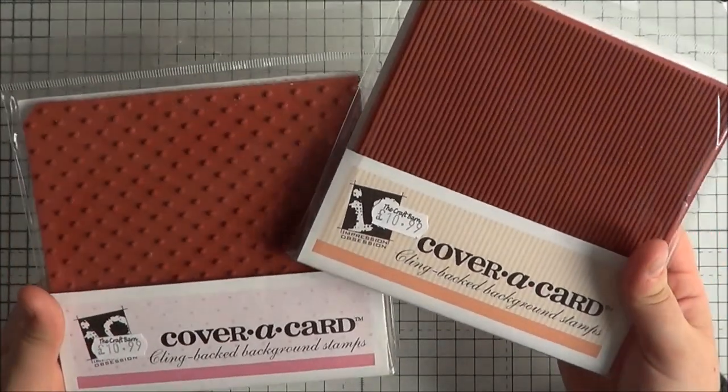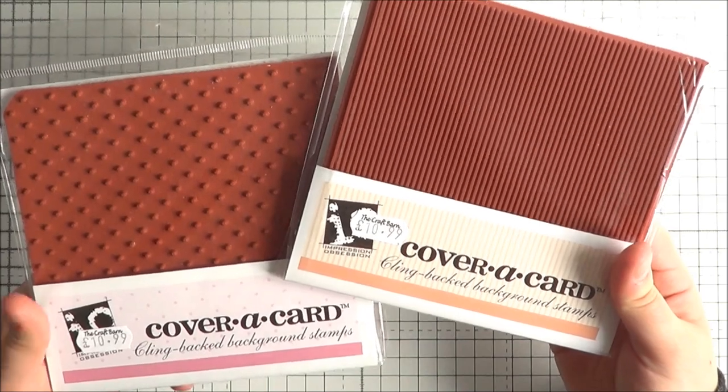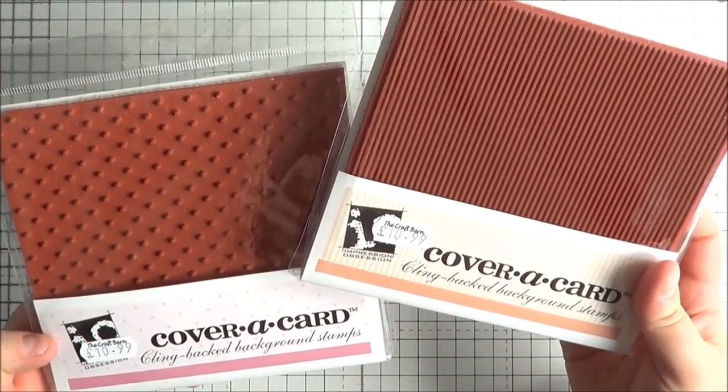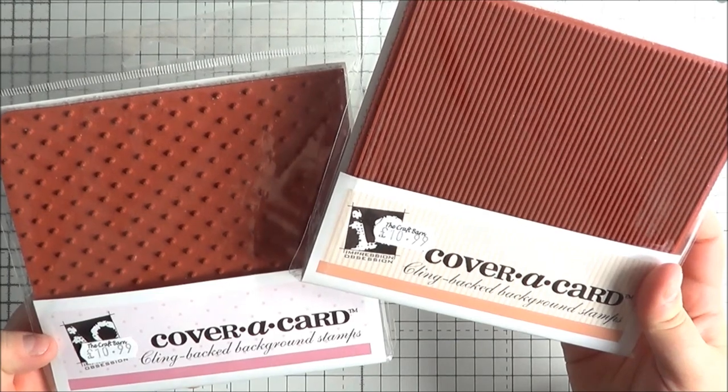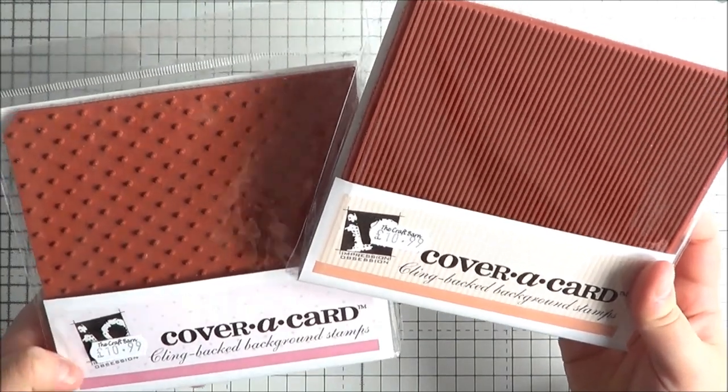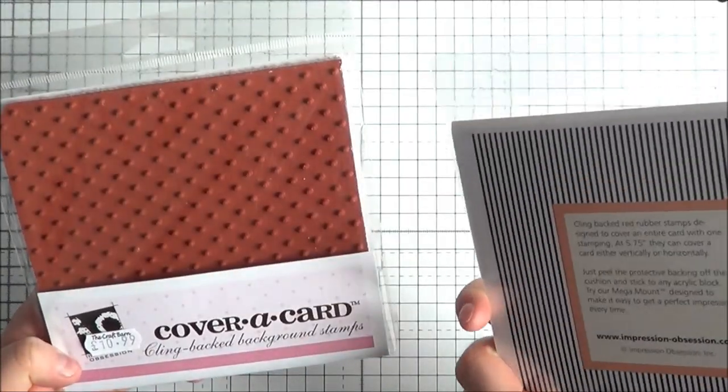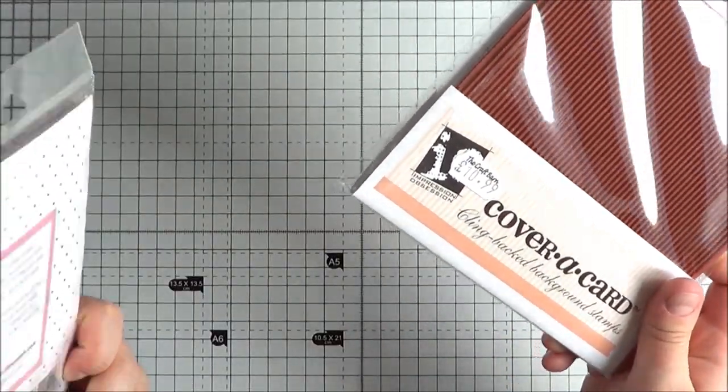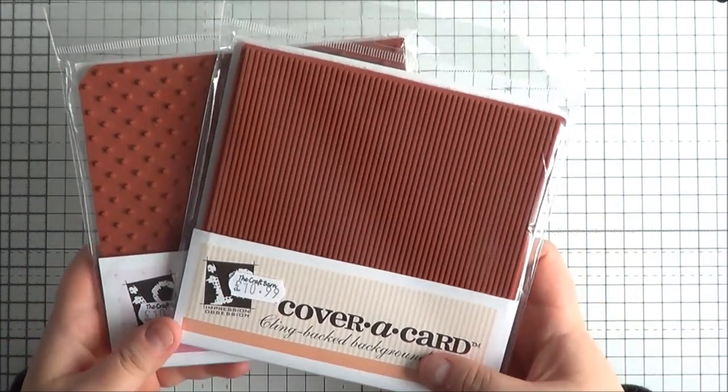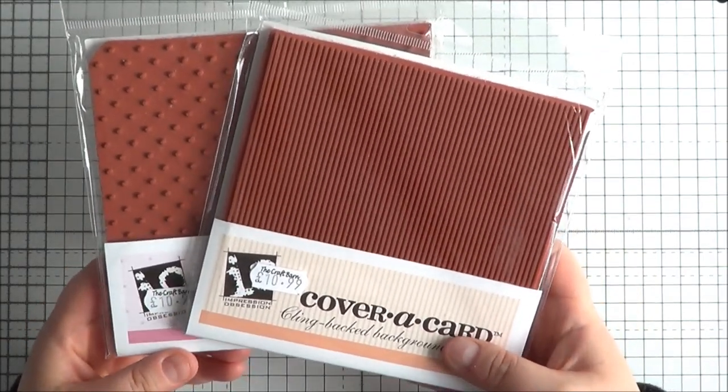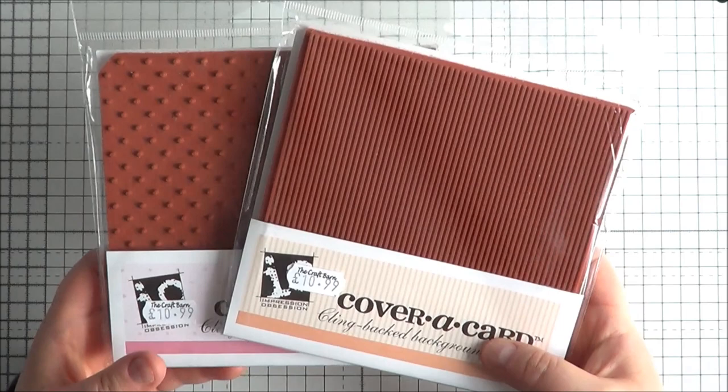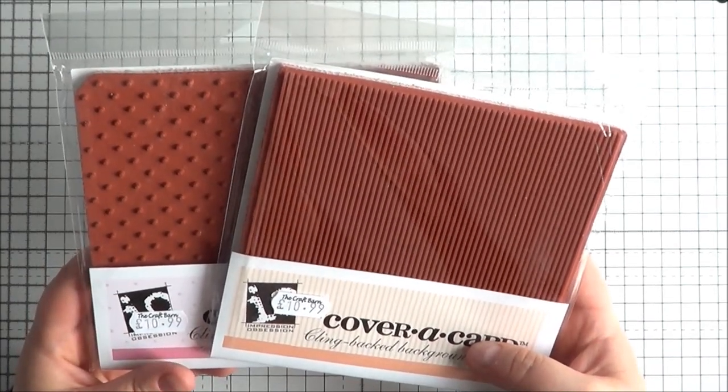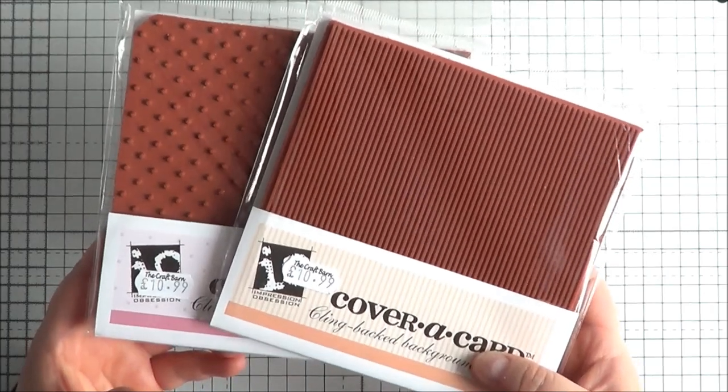So first of all I got two of the cover a card stamps. These are the background stamps from Impression Obsession. I got the thin stripes and then I got the small dots as well. I've seen Jennifer Maguire use them and if you've seen my last haul video I got one of the other ones from Simon Says Stamp. I haven't actually used them yet but I am looking forward to using those.